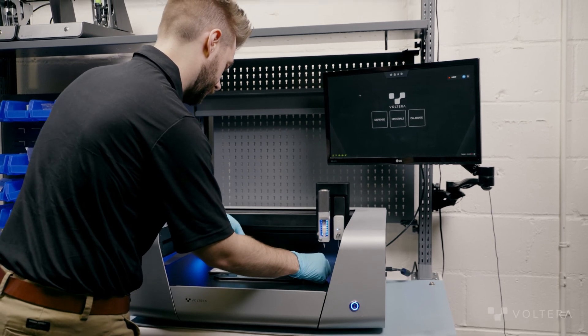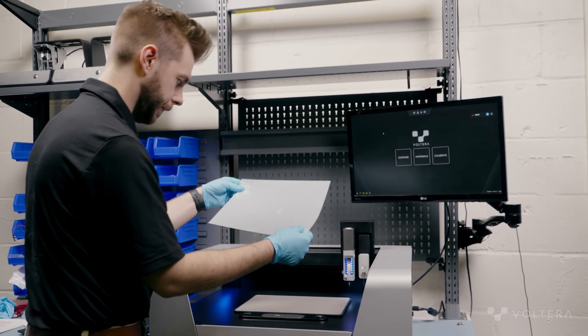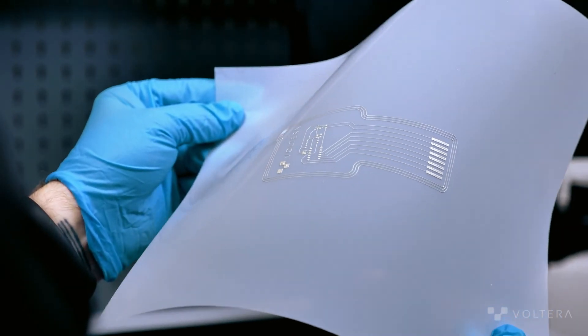With the vacuum disengaged, we can just pull this straight off the print area. Looks great to me. Our print is done.